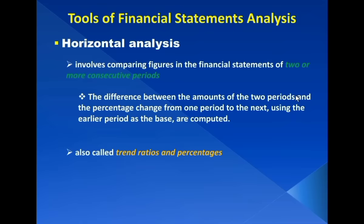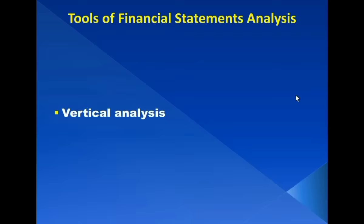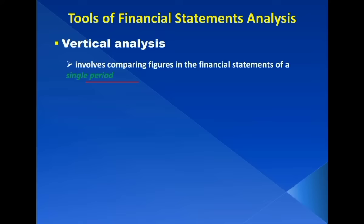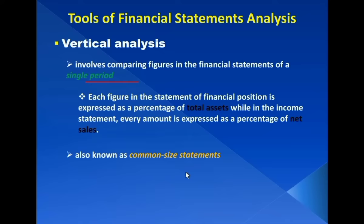If horizontal analysis compares figures in the financial statements of two or more consecutive periods, vertical analysis involves comparing figures in the financial statements of a single period. It evaluates financial items in relation to a base amount. In the statement of financial position, the base amount is that of the total assets, while in the income statement, the basis is the net sales. Each figure in the statement of financial position is expressed as a percentage of total assets, while in the income statement every amount is expressed as a percentage of net sales. Vertical analysis is also known as common size statements.